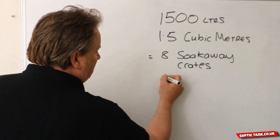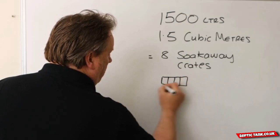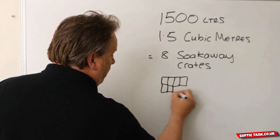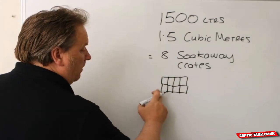That would be four crates. You'd have one, two, three, four on four. So you basically have four wide and two long.